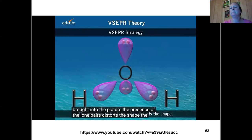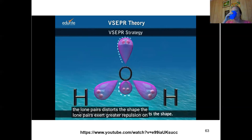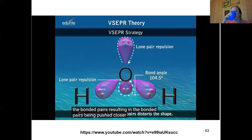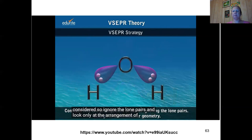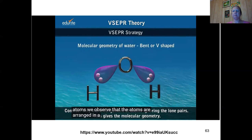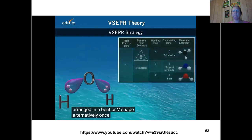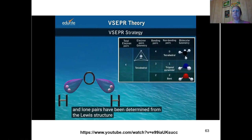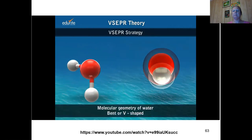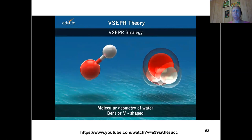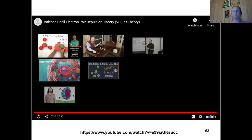The lone pairs exert greater repulsion on the bonded pairs, resulting in the bonded pairs being pushed closer to each other. To determine the molecular geometry, only the atoms need to be considered — ignore the lone pairs and look only at the arrangement of atoms. We observe that the atoms are arranged in a bent or V-shape. Alternatively, once the numbers of bonded and lone pairs are determined from the Lewis structure, the shape is identified using the VSEPR molecular geometry table.